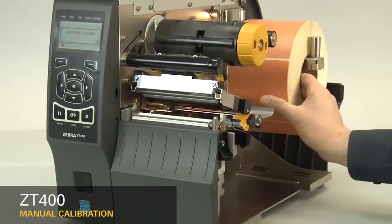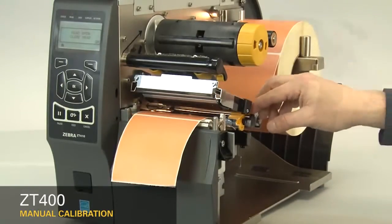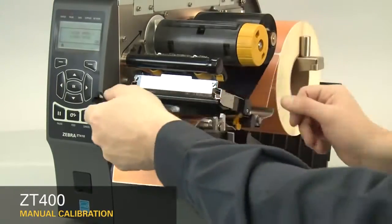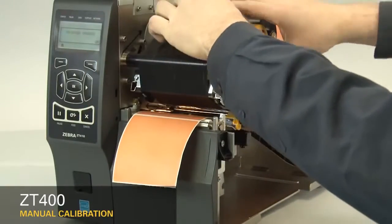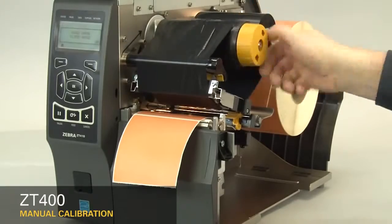Now, load the media and ribbon. Make sure the media and ribbon are fully inserted. If you have any media handling operations, such as a peel, liner take-up, cutter, or rewind, please calibrate in those print modes.